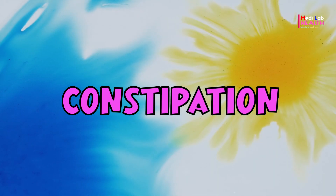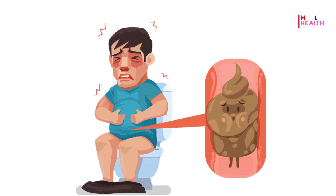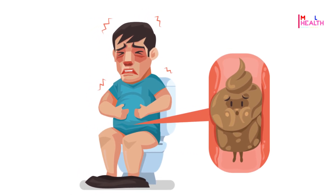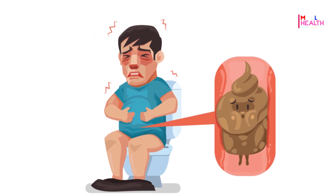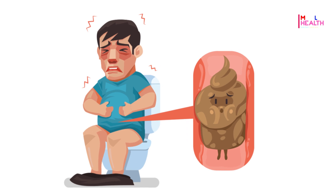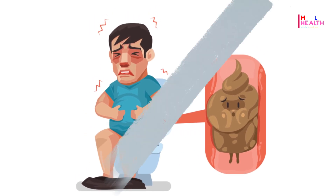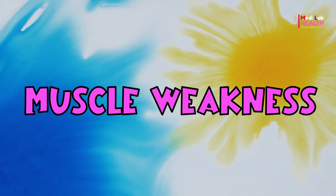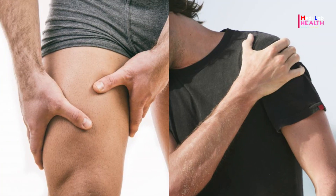Constipation occurs either because too much water is absorbed from your food, or your colon isn't contracting frequently or strongly enough. In either case, the stool moves too slowly. Sluggish or weaker colon contractions, known as reduced gut motility, are characteristic of hypothyroidism.